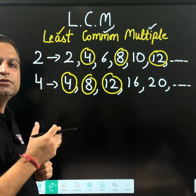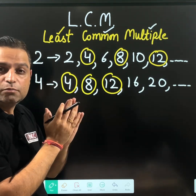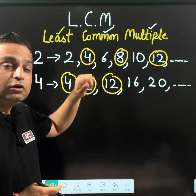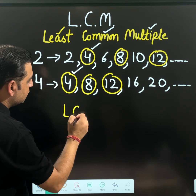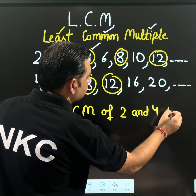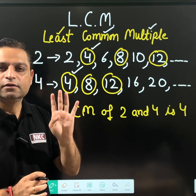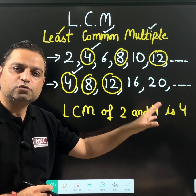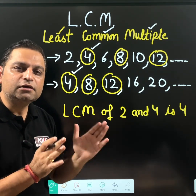Then 'least' — you can say least or lowest — means the smallest among all of the common ones. Like 4, 8, and 12 are the common values I found. The lowest among them is number 4. So I can say that the LCM of 2 and 4 is 4. Least common multiple of 2 and 4 is 4. In other words, 4 is the smallest number which comes in their table. This is the practical meaning of LCM.